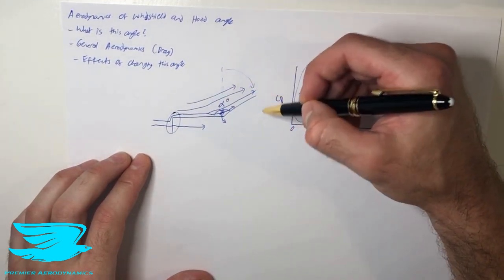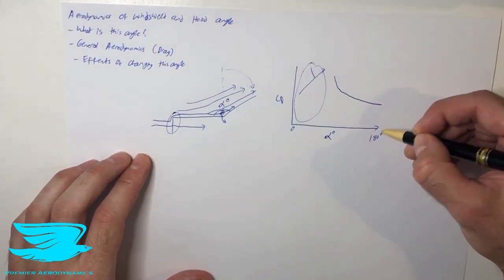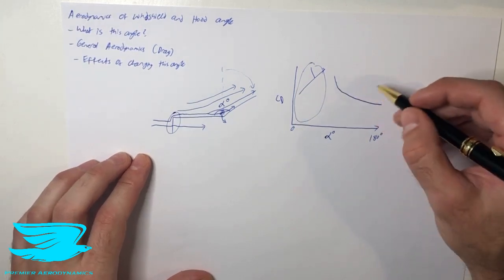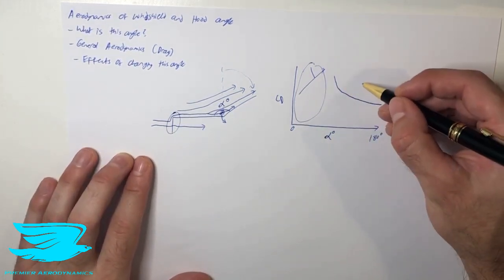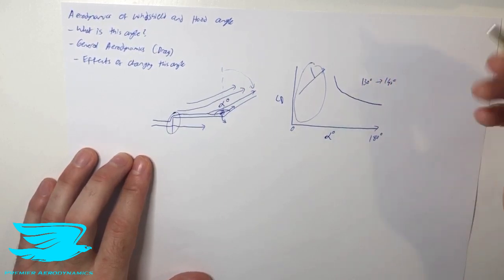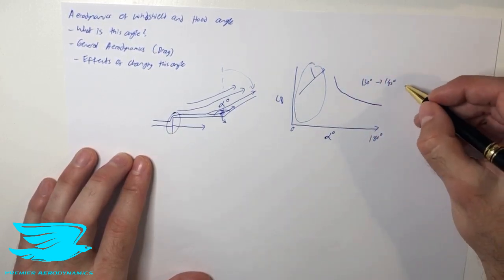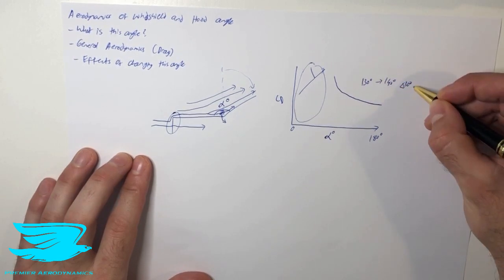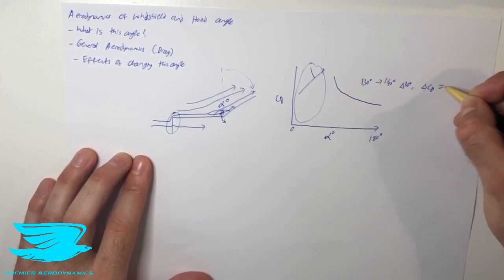And this reduction goes, we might get if we go from 130 degrees to 140 degrees, which is about a standard angle change, maybe so 10 degree difference in this range, we'll get a delta Cd of about minus 0.01, so 10 counts.